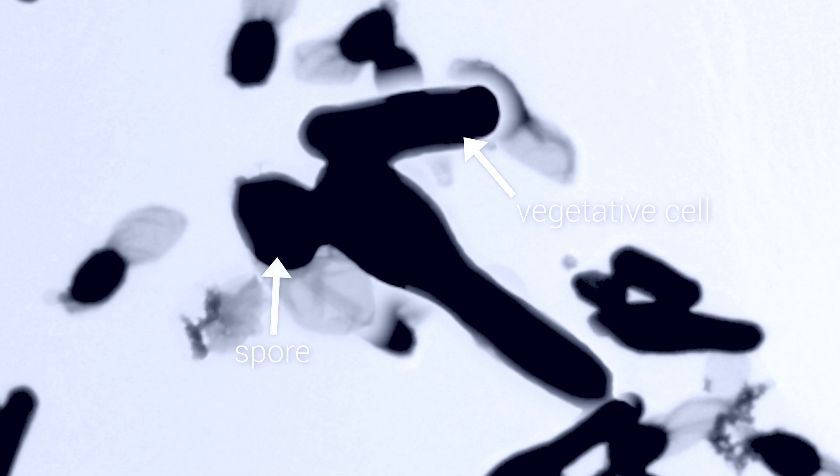How do we get these vegetative cells inside the tumor? We do this by injecting spores. These are vegetative cells, and this is actually a produced spore.